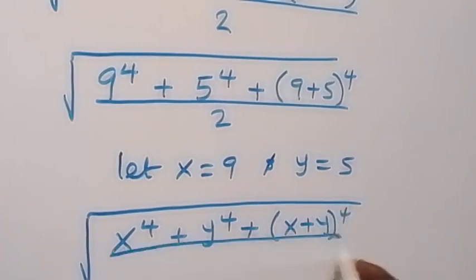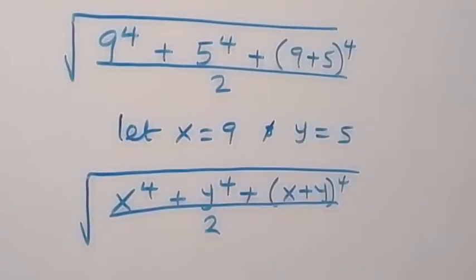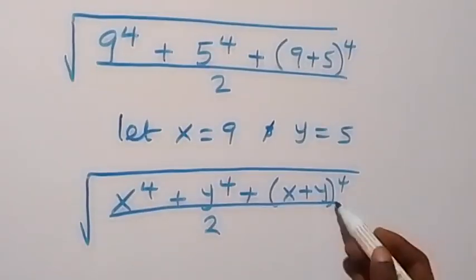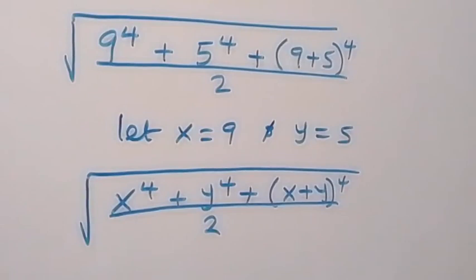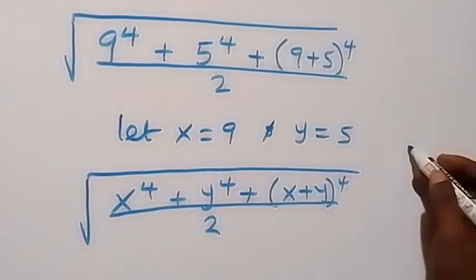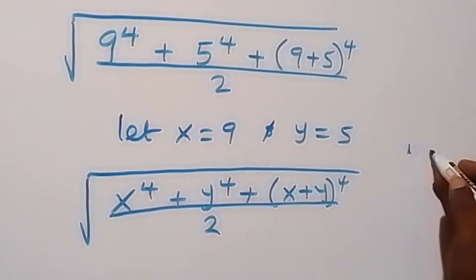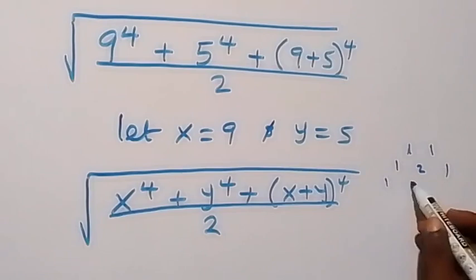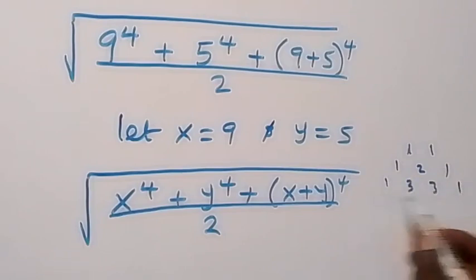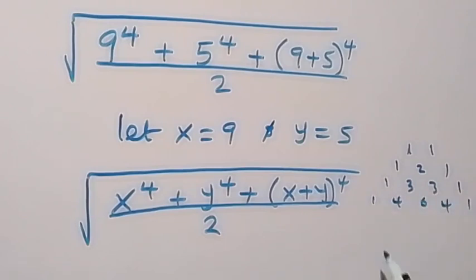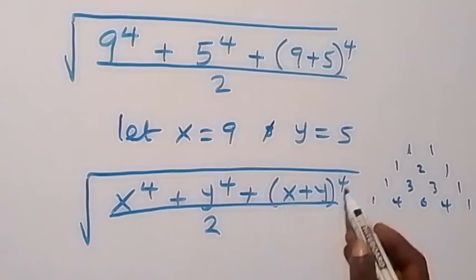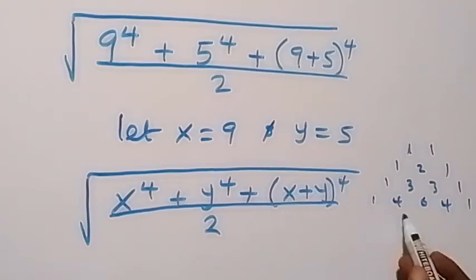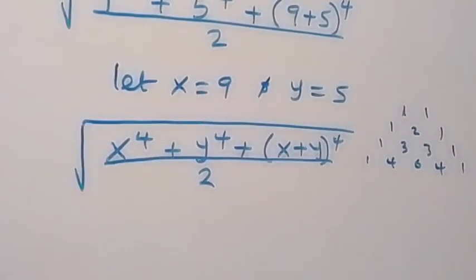From here we can open the brackets, and that follows from Pascal's triangle: 1 1; 1 2 1 when the power is 2; 1 3 3 1 when the power is 3; then 1 4 6 4 1 when the power is 4. So the coefficients of this expansion will be 1, 4, 6, 4, 1. So here this becomes square root of...